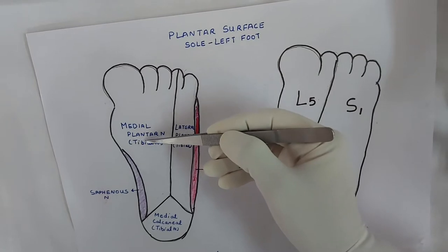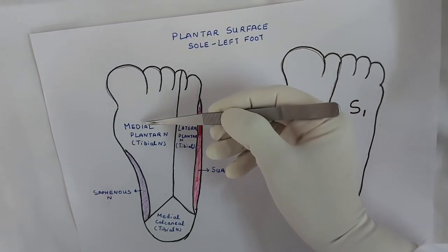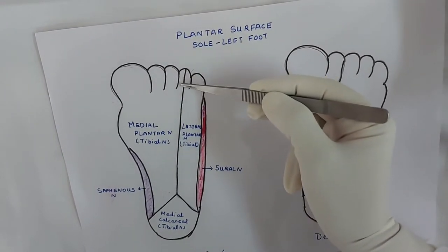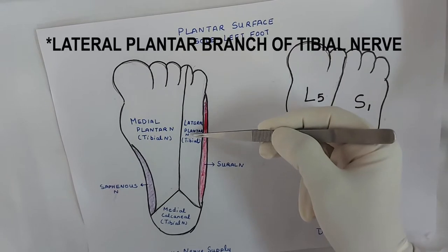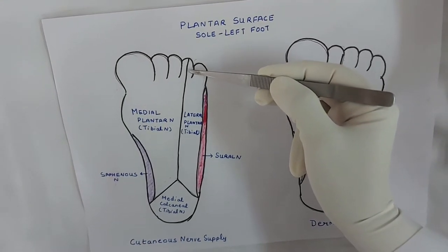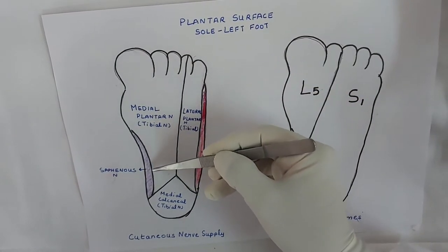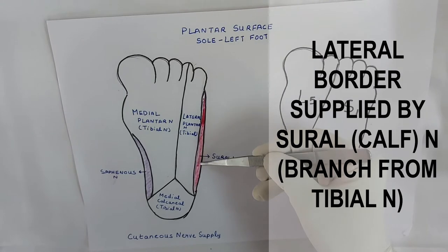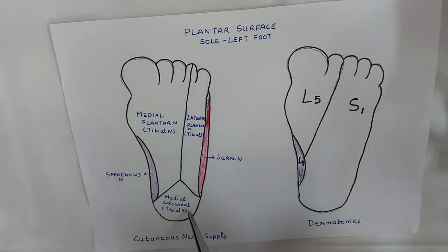The anterior and medial part of the sole is supplied by the medial plantar branch of the tibial nerve. This medial plantar nerve will also supply the skin over the plantar surface of the medial three and a half toes. The lateral part of the sole of the foot will be supplied by the lateral plantar branches of the tibial nerve, and these lateral plantar nerves will also supply the plantar surface of the lateral one and a half toes. The medial border is supplied by the saphenous nerve, the lateral border by the sural nerve, and the heel by the medial calcaneal branches of the tibial nerve.